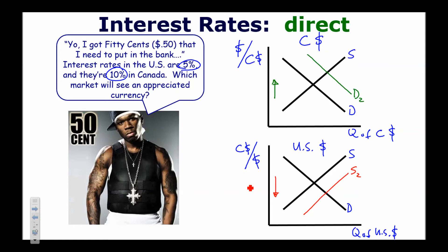We could also approach this from the Canadian perspective — if Canadians see that interest rates are lower in the US, they would demand fewer US dollars and supply fewer of their own. It doesn't really matter which curve you move as long as it makes sense. I find it easiest to concentrate on moving the demand curve for the currency being discussed, because it's more intuitive. So if we're asking what happens to the value of the Canadian dollar, move the demand curve for the Canadian dollar.